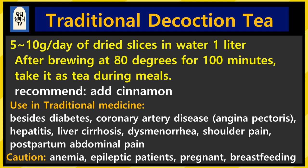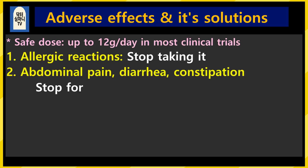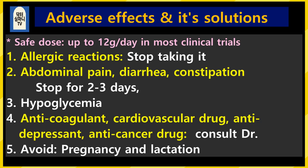In traditional medicine, besides diabetes, there are records of use in angina, coronary artery disease, hepatitis, and various pain problems. People with anemia or who are pregnant should be cautious. Regarding side effects: in most clinical trials, up to 12 grams per day is safe. If you have any allergy symptoms, stop. Abdominal pain, diarrhea, and constipation can occur — stop for 2 to 3 days and start again with a small amount. Low blood sugar symptoms can also occur. If you are taking anticoagulant, cardiovascular, antidepressant, or anti-cancer drugs, it is better to consult a doctor. When pregnant or breastfeeding, it is better to avoid.